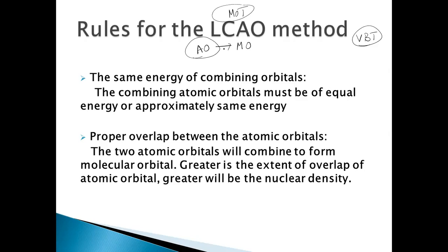This combination is called the linear combination of atomic orbitals. There are certain rules which need to be followed for this combination. The first rule is that the atomic orbitals which are combining should have the same energy, the overlap should be maximum between the two orbitals, and they should have the same symmetry.